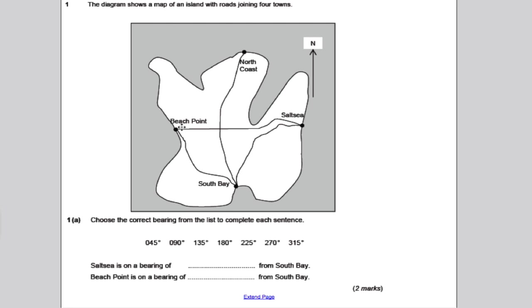Okay, it's about an island, points on an island, and roads between these points. It says choose the correct bearing to complete the sentence. Salt Sea is on a bearing from South Bay. So, key point here, South Bay is where we're starting. Where is Salt Sea in relation to it? Well, roughly it's along that bearing there. What is that bearing? Well, you always measure from the north, so we're looking for that angle. It's an acute angle, it's less than 90, so any of these that are less than 90, well this one is, and 045 seems to fit the bill. And we're done, a nice easy one mark there.